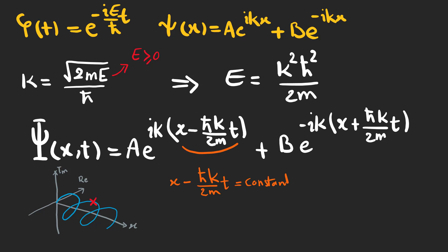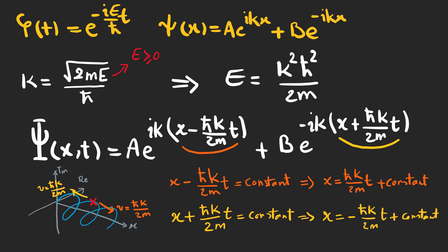The first term in our wave function is a wave moving in positive direction with the speed of h bar k over 2m. And the second term is a wave moving in opposite direction with the same speed.